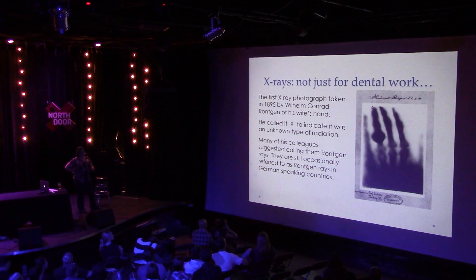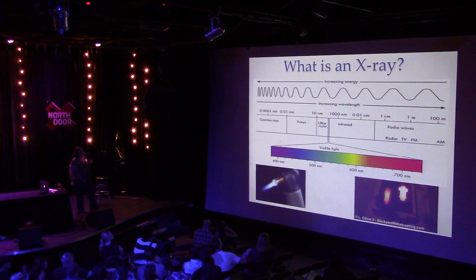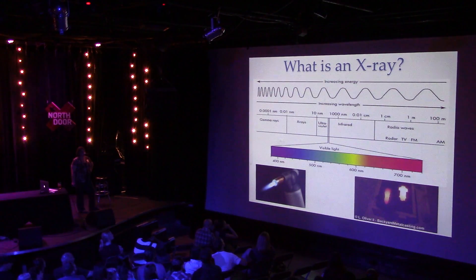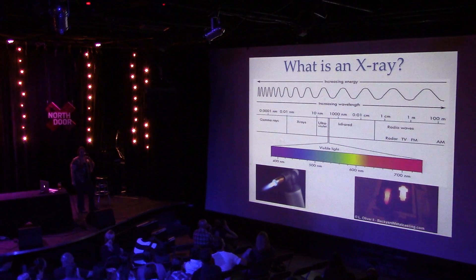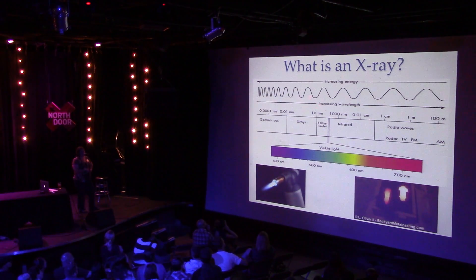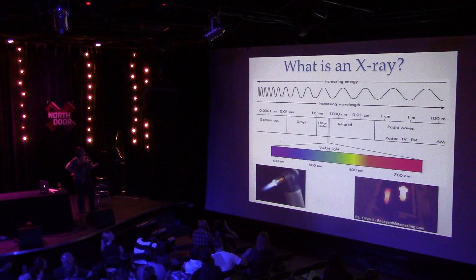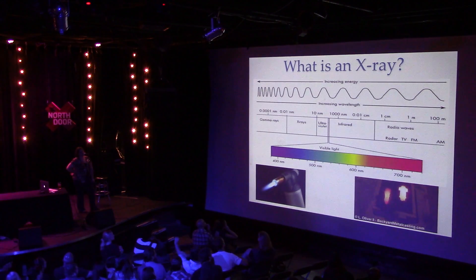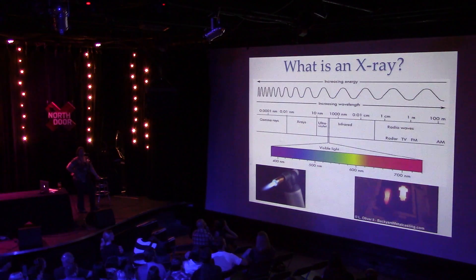An x-ray is just part of the electromagnetic spectrum. You're probably familiar with visible light — the rainbow ranging from red to violet. But there's more to it. Going further red you've got infrared, and past that you've got radio waves. On the blue side, shorter wavelengths and higher energy, you've got ultraviolet, then x-ray, and the gamma rays are the highest energy.